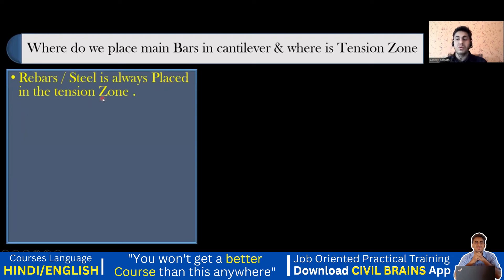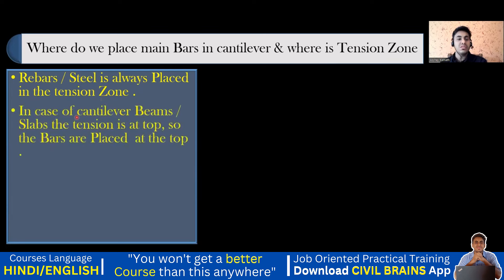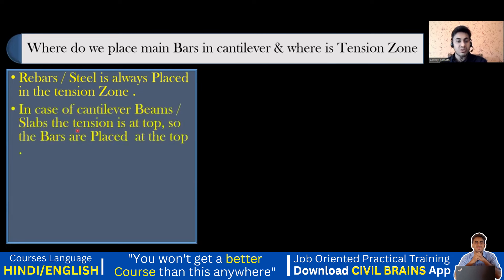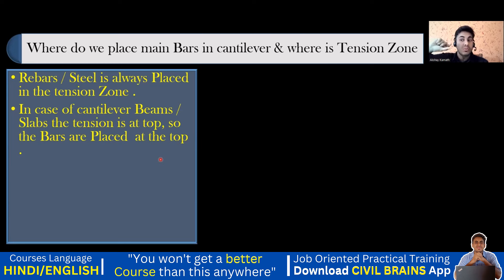Steel or rebar is always placed in the tension zone — that is the first thing to remember. In a simply supported beam, the tension is at the bottom. In a cantilever beam, the tension is at the top. So the bars are placed at the top in a cantilever. I'll explain this through an image — wherever there is tension, we are going to provide steel.